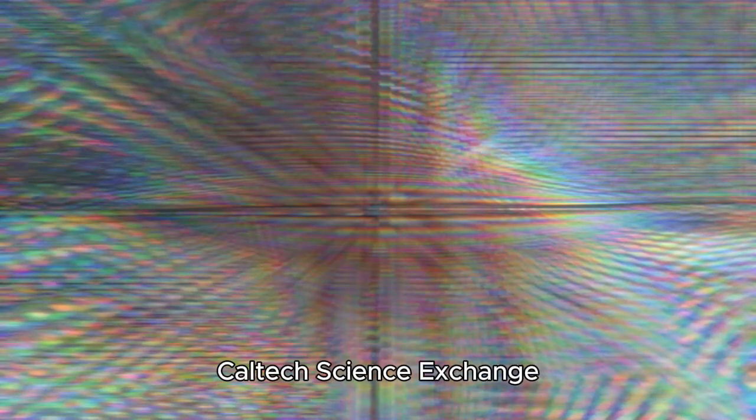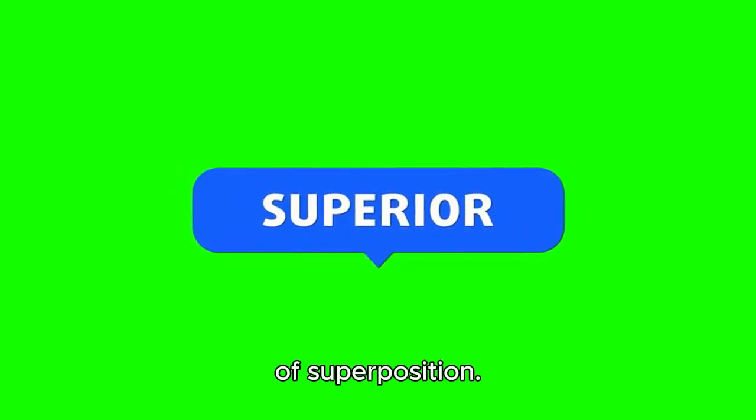Illustration of light going through a horizontal filter and being blocked by a vertical filter. No light passes through a horizontal filter followed by a vertical filter. Credit: Lance Hayashita for Caltech Science Exchange. Adding a diagonal filter between the horizontal and vertical filters allows some light to go all the way through the system. This is also a result of superposition.